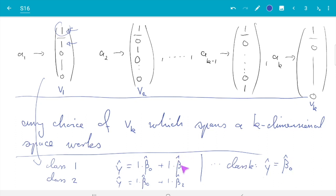So beta hat 1 is interpreted as the change of intercept relative to the reference level, which in my example was class k. Beta hat 2 is change of intercept for class 2 relative to class k. So that would change if we put different vectors here, because these entries of the vectors were which went into this argument.